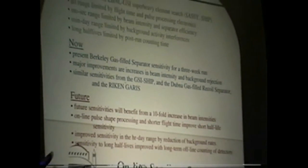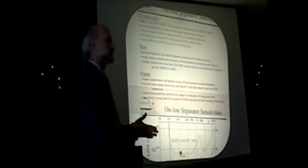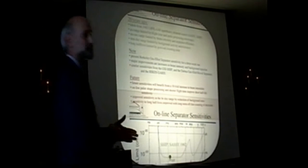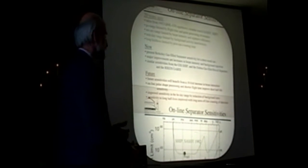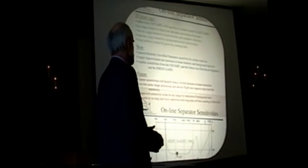There's a reduction in sensitivity because of background rates. The way these experiments work is you have a separator, you produce the thing in a nuclear reaction. The compound nucleus products recoil out of the target with the momentum of the beam and fly through the separator. It implants in the detector, you detect that, and then you watch that position in the detector for the subsequent decay.